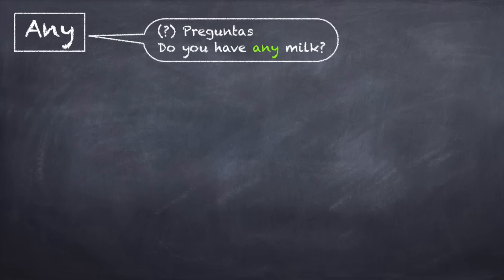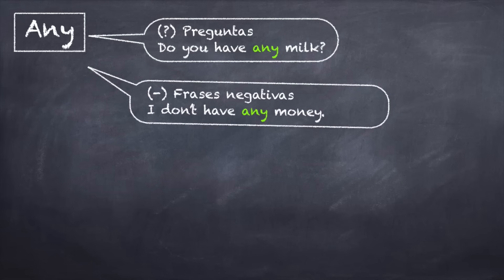And when do you use 'any'? 'Any' is used for questions — for example, 'Do we have any milk?' It's also used for negative phrases. For example, 'No tengo nada de dinero' — in English: 'I don't have any money.' Not 'I don't have no money' — you can't have two negative words in English. 'I don't have any money.'